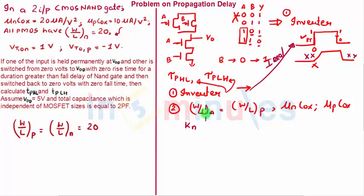Because we have W by L of N and W by L of P, and mu NCOX and mu PCOX, we can easily find KN and KP, which is nothing but mu NCOX times W by L of N. This is nothing but mu PCOX times W by L of P. I'll just substitute from what is here because everything is given to me.